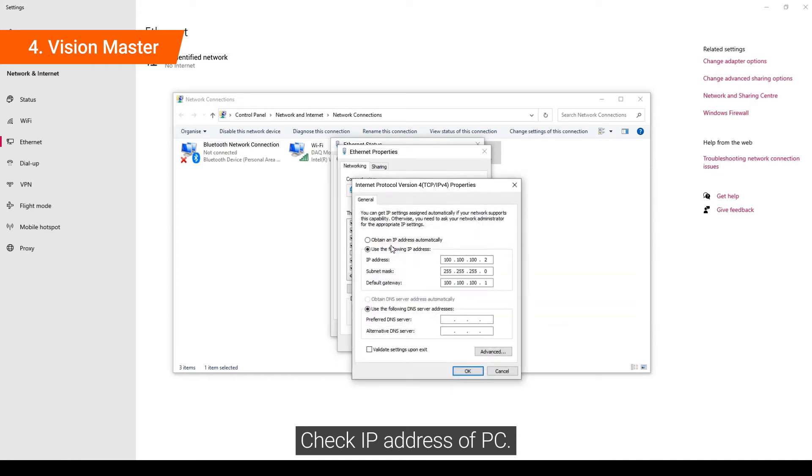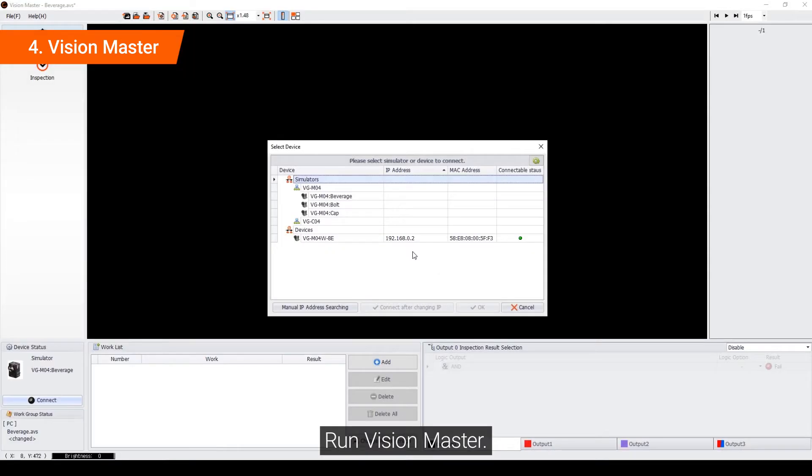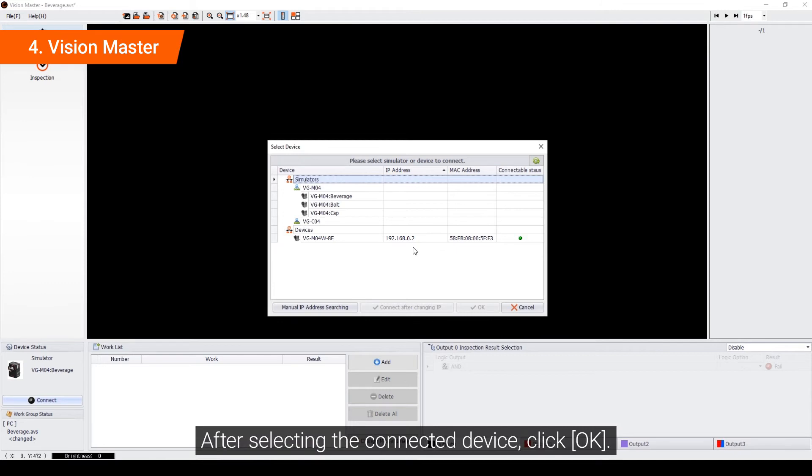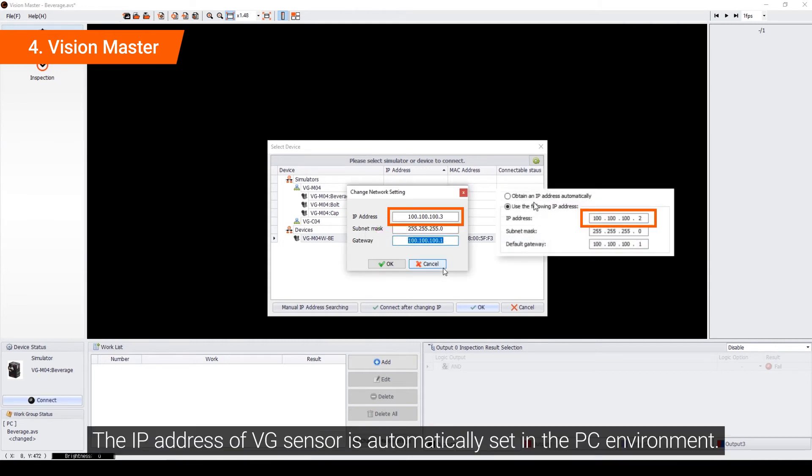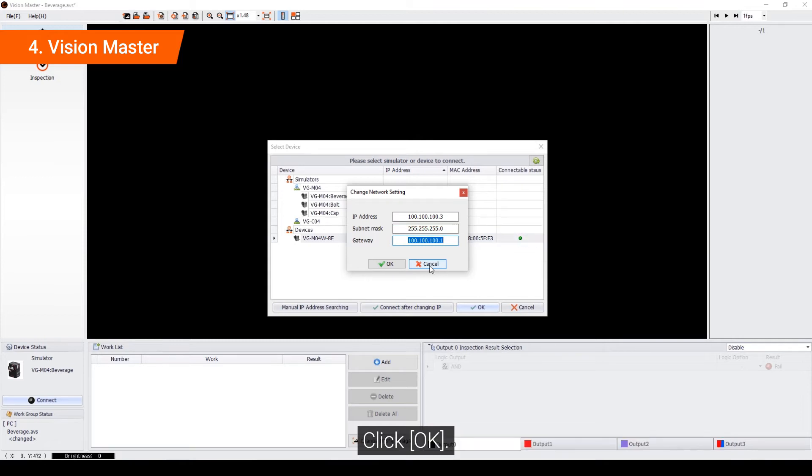Run Vision Master. After selecting the connected device, click OK. Click Yes. The IP address of the VG sensor is automatically set in the PC environment. Click OK.